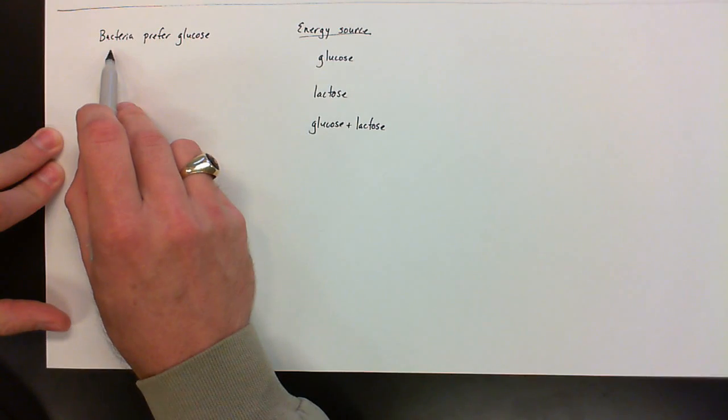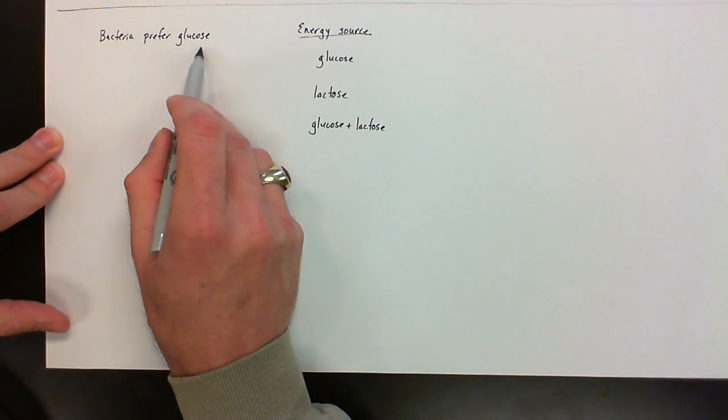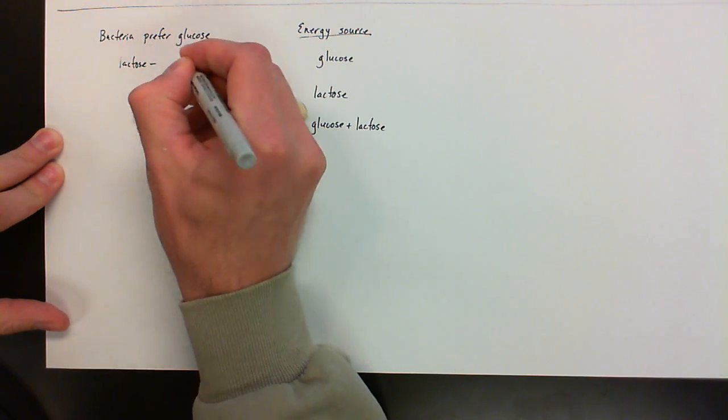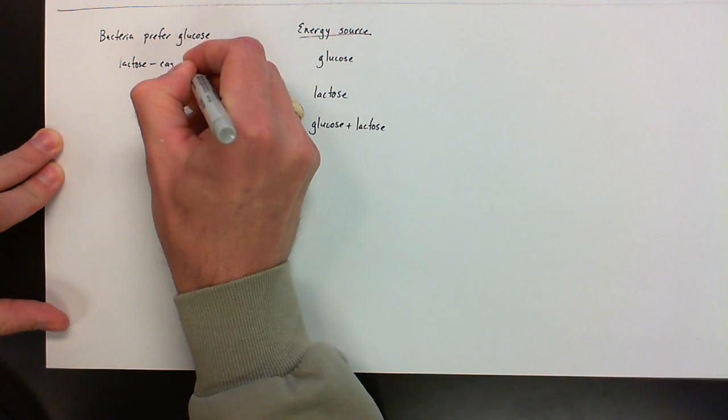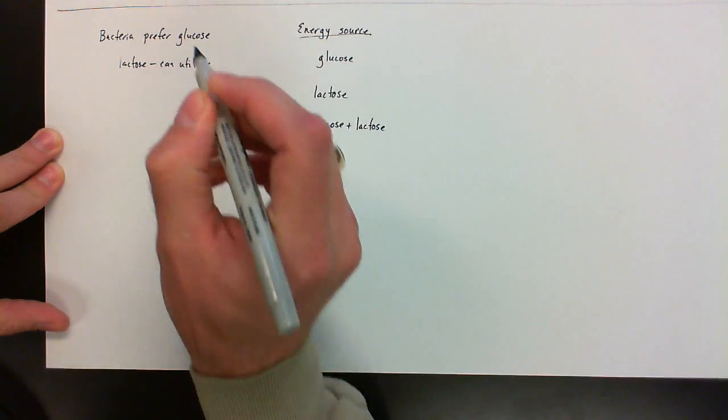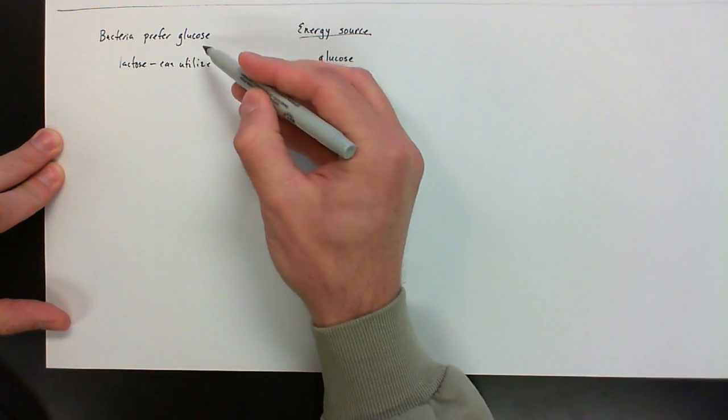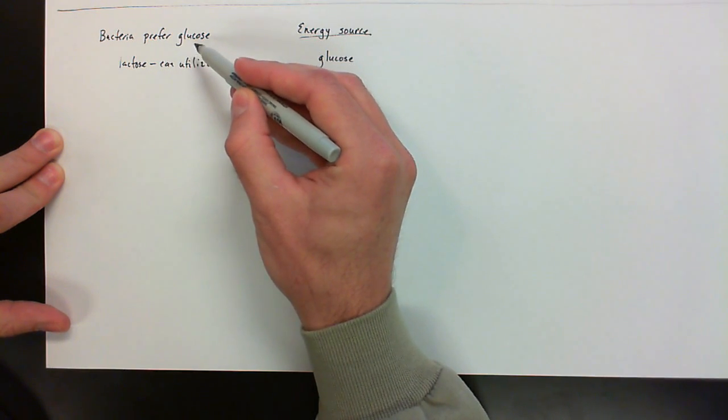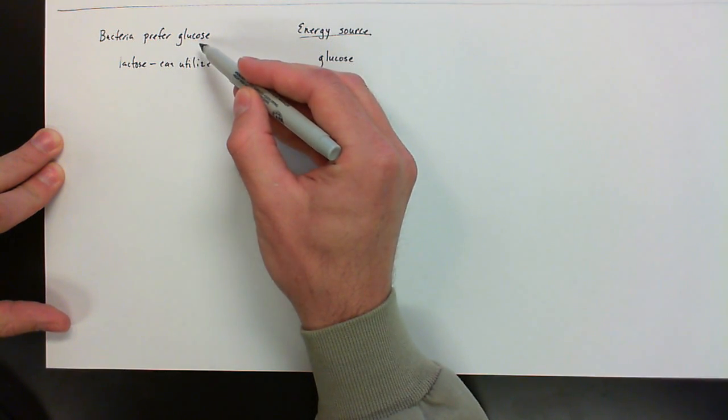So all in all, bacteria will prefer the energy source of glucose. However, if lactose is around, they can utilize it for energy. So that's important. But what it also means is if glucose and lactose are both available, it will preferentially utilize glucose for its energy.